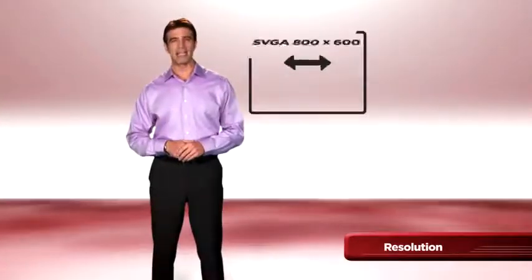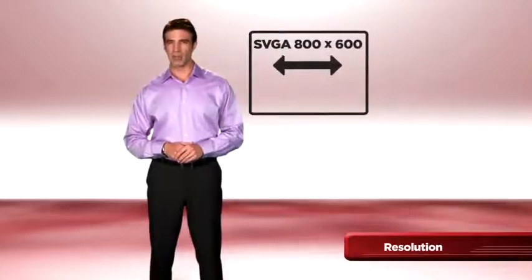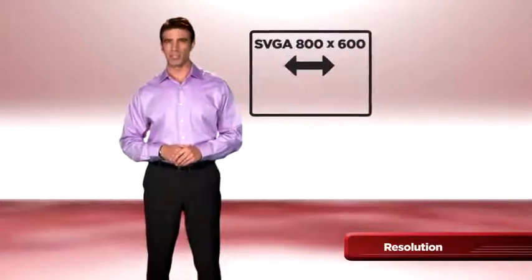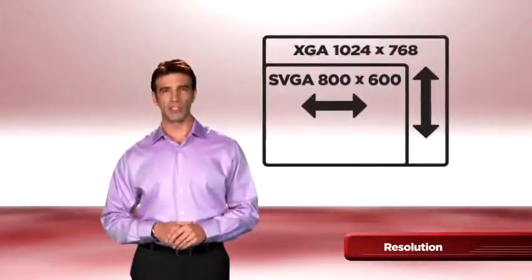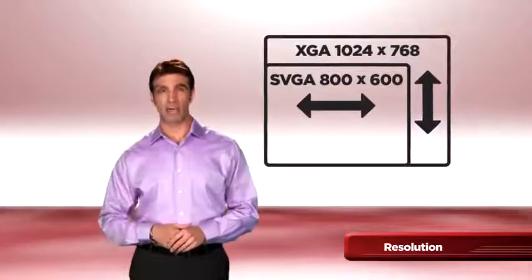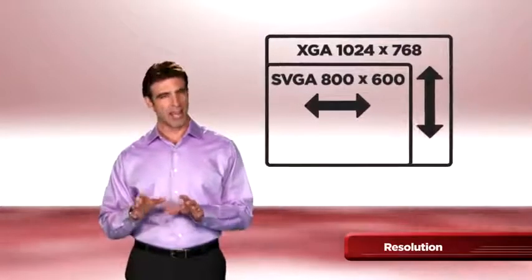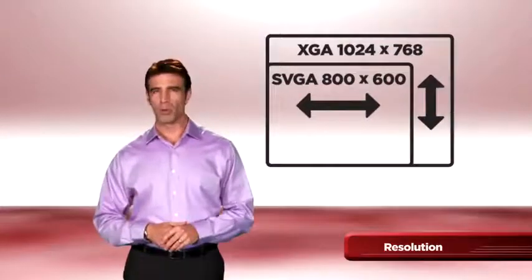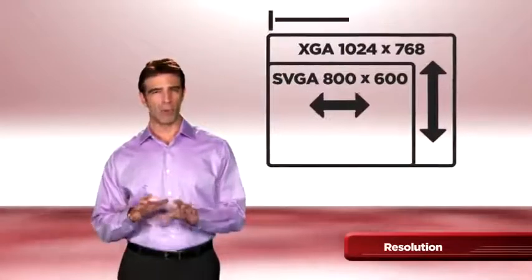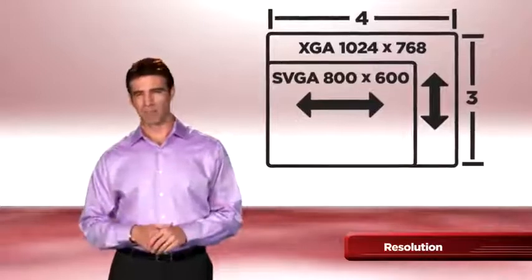First is 800 by 600 pixels, or SVGA resolution, and is the minimal resolution normally found in business projectors. Then there is 1024 by 768, or XGA resolution — it has higher resolution and is sharper than an SVGA image. Both SVGA and XGA projectors project a 4 by 3 aspect ratio, or more of a square-shaped image, sometimes referred to as a standard screen size.